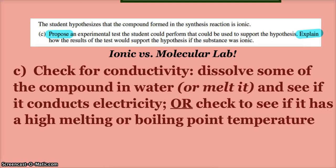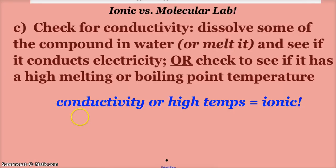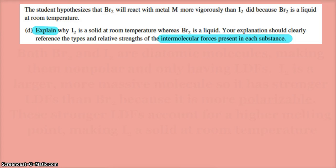Check for conductivity: dissolve some of the compound in water or melt it and see if it conducts electricity, or check to see if it has a high melting or boiling point temperature. So if we do see conductivity or we do get high melting or boiling temperatures, then that would definitely confirm that this would be an ionic compound.